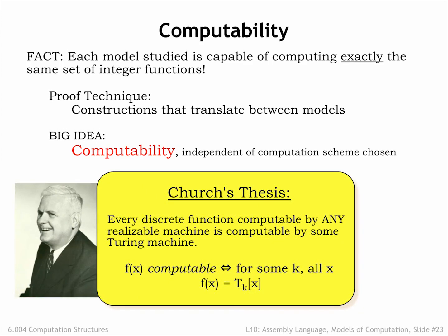This notion is formalized by Church's thesis, which says that every discrete function computable by any realizable machine is computable by some Turing machine. So if we say that the function f is computable, that's equivalent to saying that there's a Turing machine which, given x as an input on its tape, will write f as an output on the tape and halt.